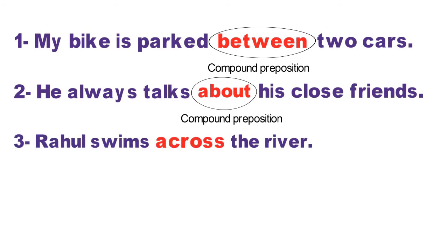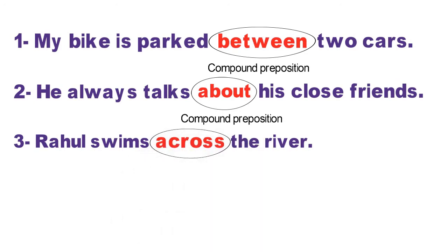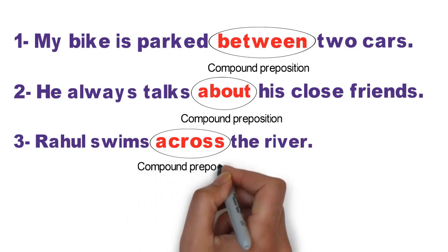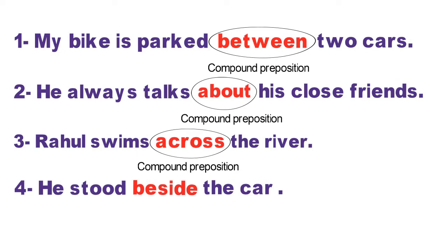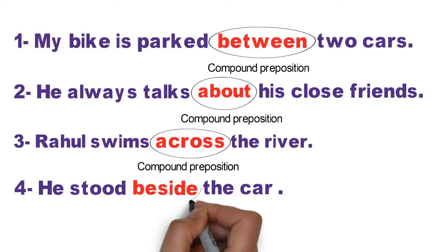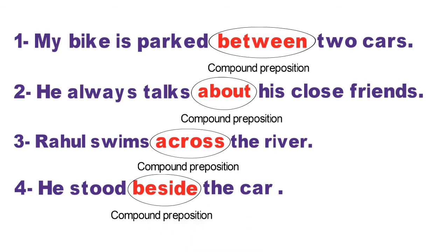Third sentence: Rahul swims across the river. Rahul nadi ke us paar tairta hai. Is sentence mein red color word 'across' ka use kiya hai, jisko 'A' prefix laga kar form kiya gaya hai, aur yah word bhi 'the river' noun se pehle likha gaya hai, isliye yeh bhi compound preposition hoga. Fourth sentence: He stood beside the car. Is sentence mein 'beside' ka use hua hai, jo 'be' prefix laga kar form kiya gaya hai. Asha karti hoon aap sabhi ko compound prepositions ke yeh examples zaroor samajh mein aaye honge.